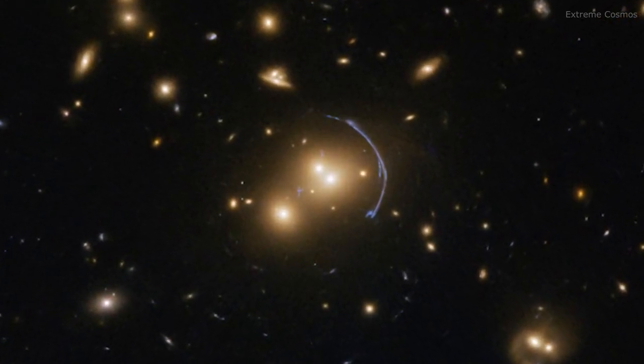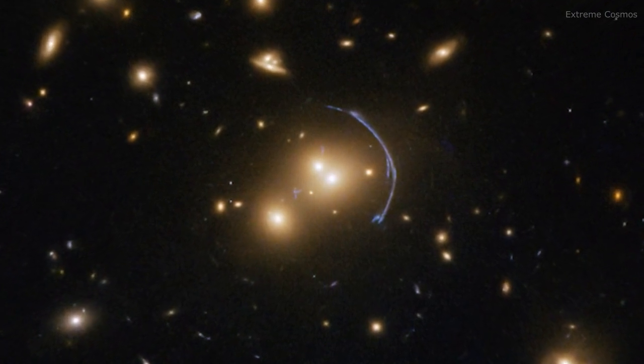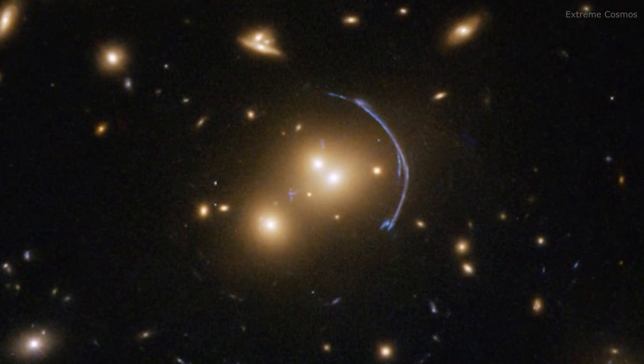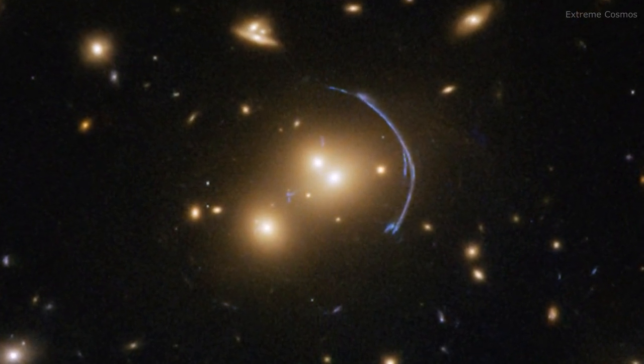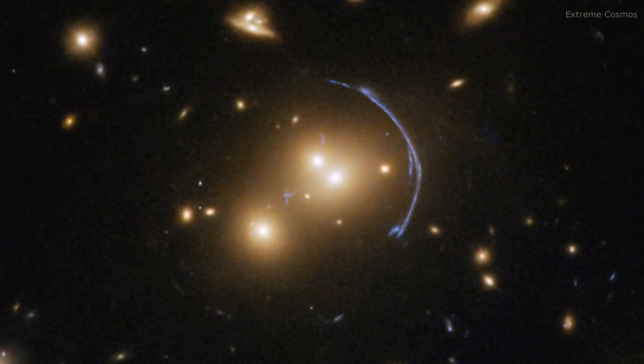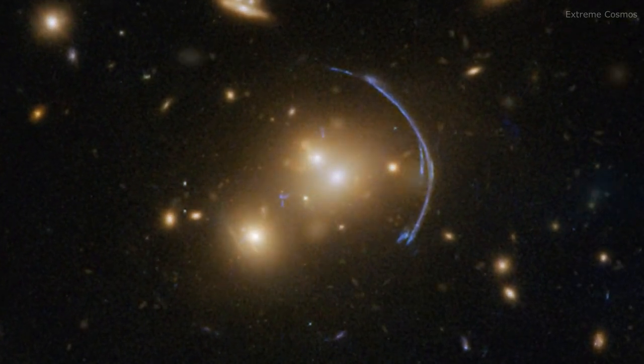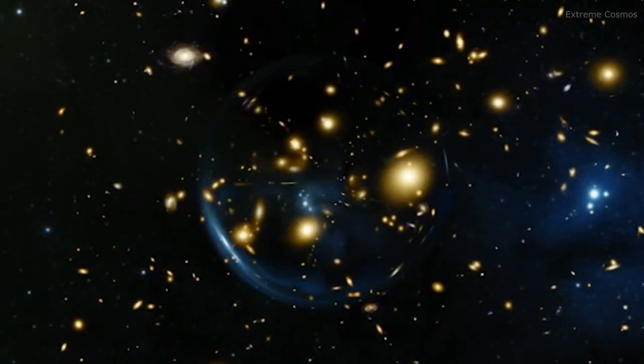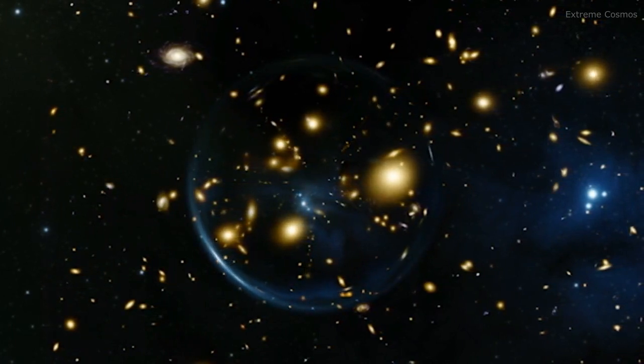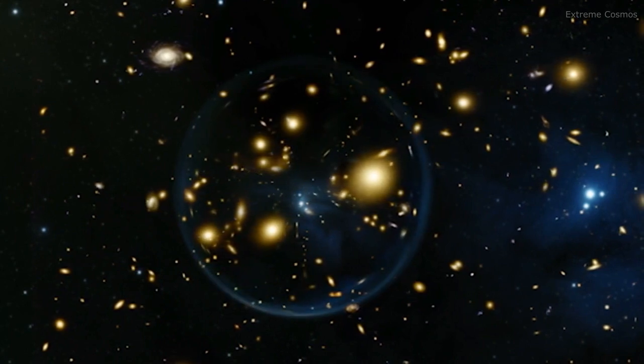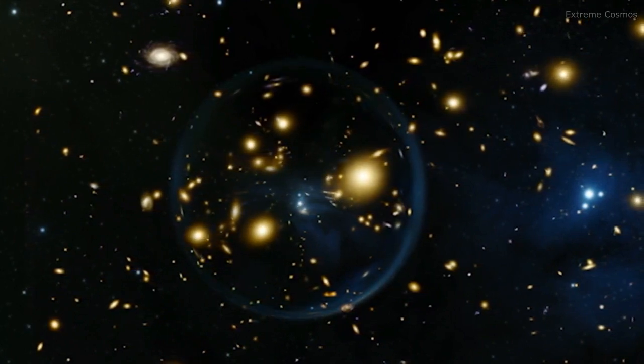Hubble can resolve details within the multiple banana-shaped arcs that are one of the main results of gravitational lensing, as the images of background sources are distorted. An important consequence of lensing distortion is magnification, allowing us to observe objects that would otherwise be too far away and too faint to be seen.